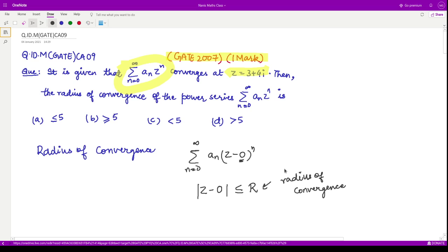As it is given in the question that the series converges at this point, therefore we can substitute z equals 3 plus 4 iota in the above expression to evaluate the bounds on radius of convergence. Therefore we have 3 plus 4 iota minus 0 modulus, this is less than equal to r.